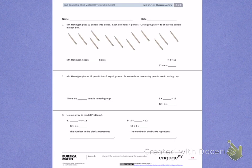Number 1. Mr. Hannigan puts 12 pencils into boxes. Each box holds 4 pencils. Circle groups of 4 to show the pencils in each box. So I need to make sure that I am circling groups of 4, not 4 groups. Groups of 4.